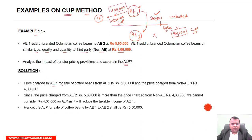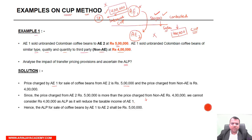Price charged by AE-1 for sale of coffee beans to AE-2 is rupees 5 lakh, and the price charged from non-AE is rupees 4 lakh. Since the price charged from AE-2 — rupees 5 lakh — is more than the price charged from non-AE — rupees 4 lakh — we cannot consider 4 lakh as the ALP as it will reduce the taxable income of AE-1. Hence the ALP for the sale of coffee beans by AE-1 to AE-2 shall be rupees 5 lakh.